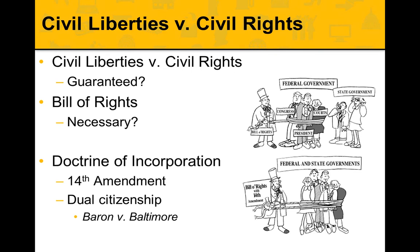The dual citizenship problem established by the Barron case is solved by the 14th Amendment. Before the 14th Amendment, the Bill of Rights only reined in Congress, the courts, and the president — state governments were essentially ignoring the Bill of Rights. With the 14th Amendment, both federal and state government power is reined in. The Bill of Rights applies to both the federal government and the state government. That is the concept of the doctrine of incorporation — the Bill of Rights is incorporated into the states through the 14th Amendment.